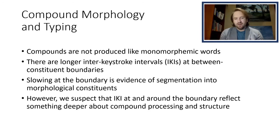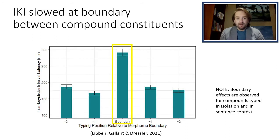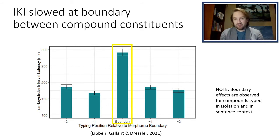This slowing at the boundary is taken as evidence of segmentation of the compound into its morphological constituents during production. However, we suspect that these inter-keystroke intervals actually reflect something deeper about compound processing and compound representation in the lexicon. Here is an example of inter-keystroke intervals at the constituent boundary — notice that they are significantly elevated compared to those surrounding them, and this is true of compounds typed in isolation and also compounds typed in a sentence context.